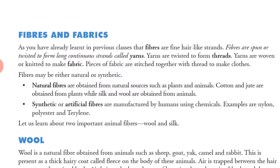Pieces of fabrics are stitched together with thread to make clothes. There are two types of fiber. One is natural fiber, obtained from plants and animals. Cotton and jute are obtained from plants. Silk and wool are obtained from animals.